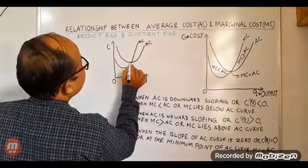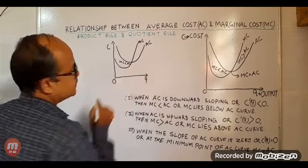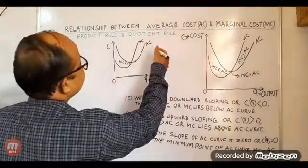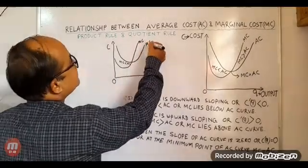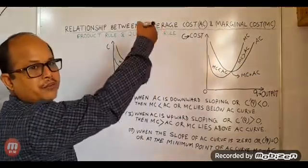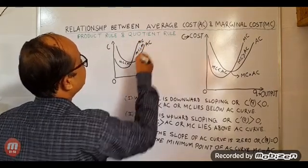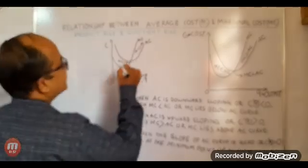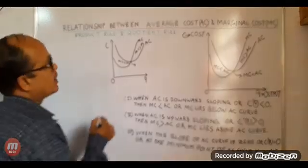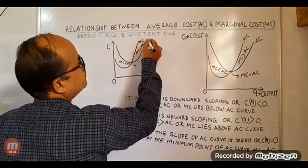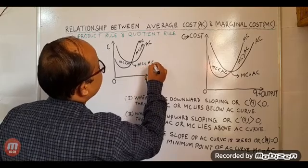So up to the minimum point, MC is less than AC. After this point, when the average cost curve is upward sloping, then marginal cost is greater than average cost. And at the minimum point of the average cost curve, the marginal cost curve is equal to the average cost curve — so MC equals AC.